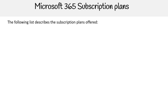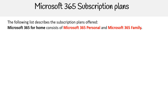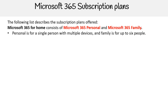The following list describes the subscription plans offered. We have Microsoft 365 for Home, and this consists of Microsoft 365 Personal and Microsoft 365 Family. Personal is for a single person with multiple devices, and Family is for up to six people.